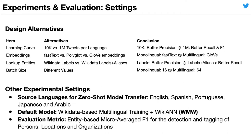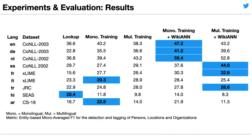We try several design alternatives in our experiments, such as different data sizes, different embedding types, and different ways to extract labels from Wikidata. Here are the entity-based micro-averaged F1 scores for nine languages on public benchmarks.